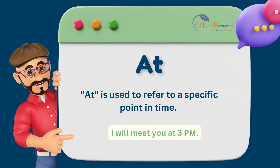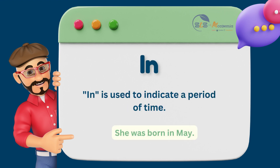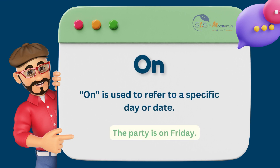'At' is used to refer to a specific point in time. For example, 'I will meet you at 3 pm' means that you will meet that person at that exact time. 'In' is used to indicate a period of time. For example, 'she was born in May' means that she was born during the month of May. 'On' is used to refer to a specific day or date. For example, 'the party is on Friday' means that the party is happening on the upcoming Friday.